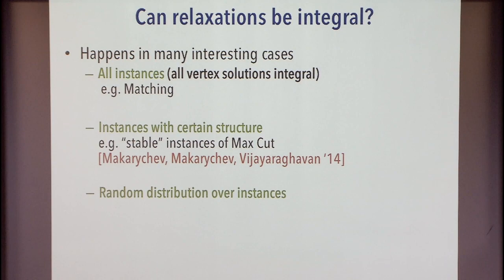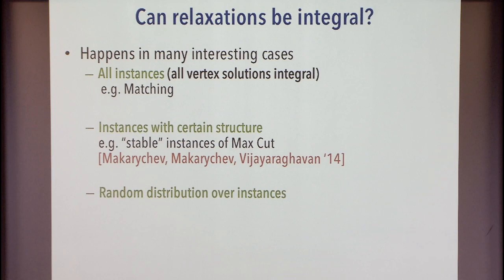There are many other examples where you study the problem under some kind of random distribution over instances, and it turns out the relaxation is integral. The distinction between structured instances and random instances is somewhat artificial, because typically the way you show that for a random instance, applying a convex relaxation gives an integral solution, is you list a bunch of properties that hold with high probability for random instances, and together these properties imply an integral solution.